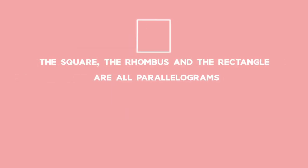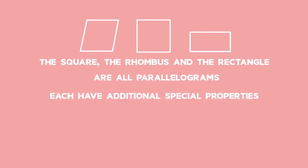So what you saw with the square, the rhombus and the rectangle is that they were all parallelograms and they each had additional special properties.